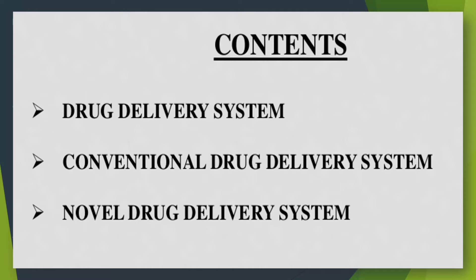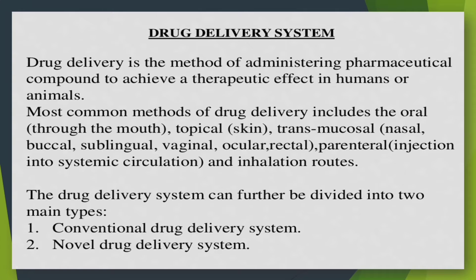The two types are the conventional drug delivery system and the novel drug delivery system. Drug delivery is the method of administering a pharmaceutical compound to achieve a therapeutic effect in humans or animals. A therapeutic effect is a consequence of medical treatment of any kind, the results of which are judged to be desirable and beneficial.